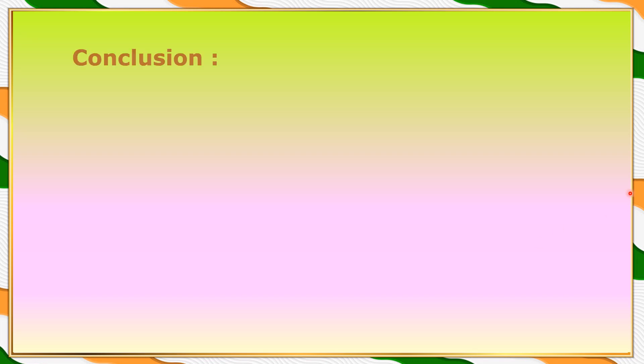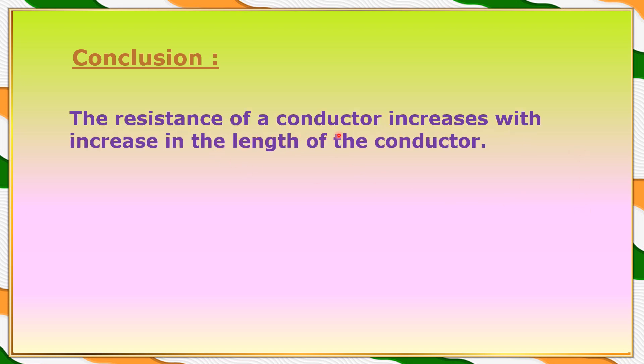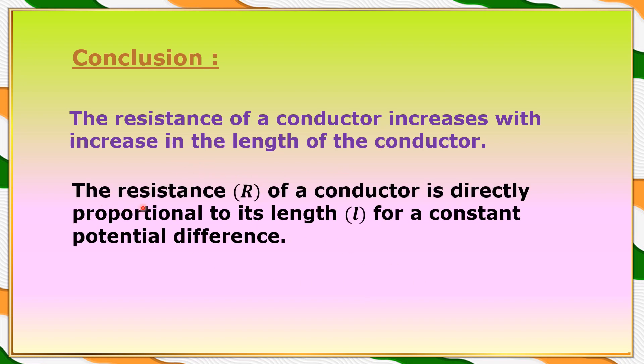Here we can draw the conclusion from this activity: the resistance of each spoke increases with increase in length for a constant potential difference. That means the resistance of a conductor increases with increase in the length of the conductor, and the resistance of a conductor is directly proportional to its length for a constant potential difference.